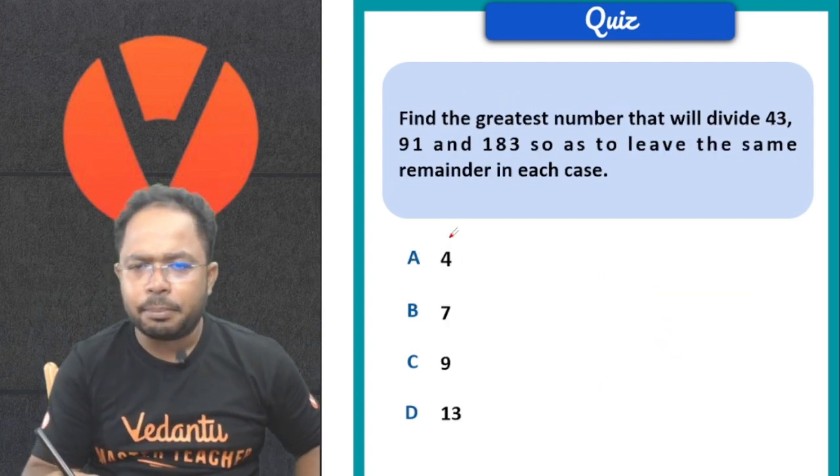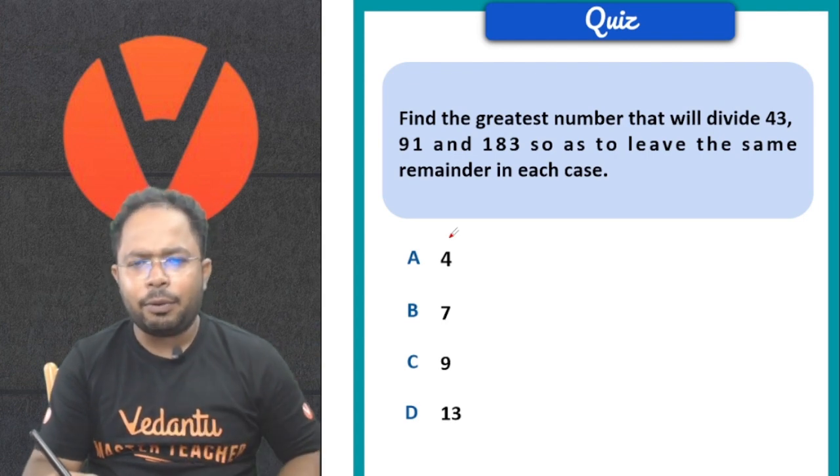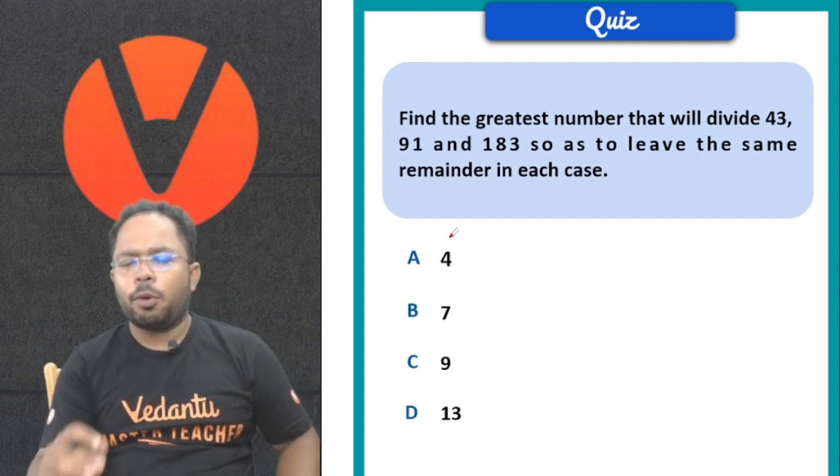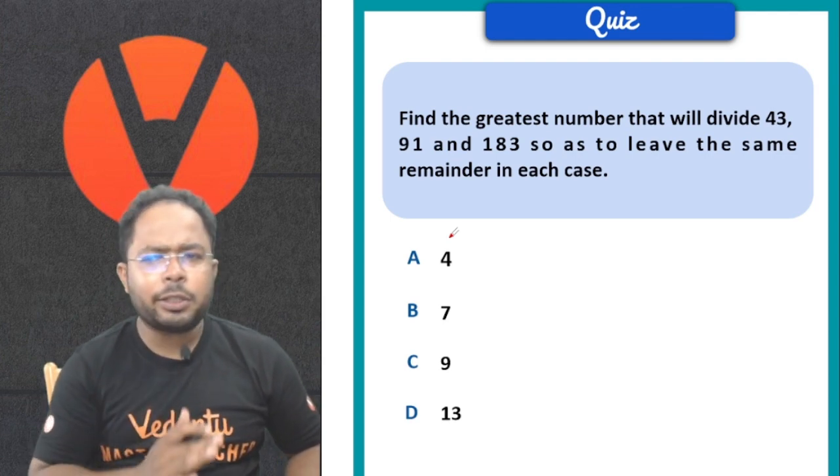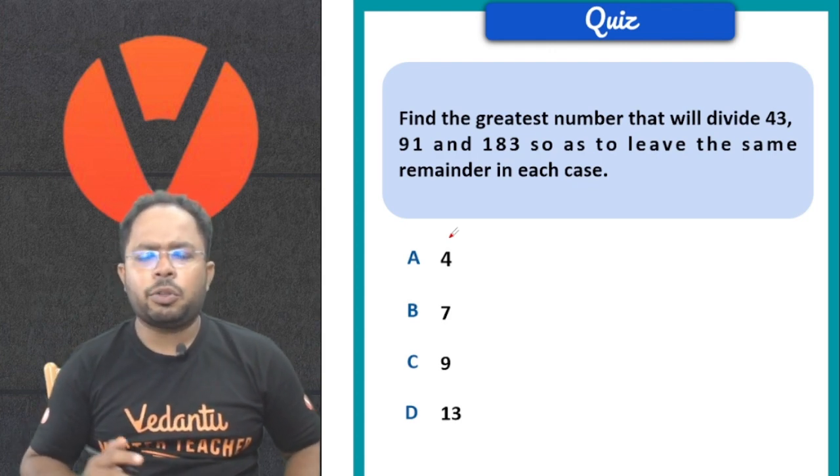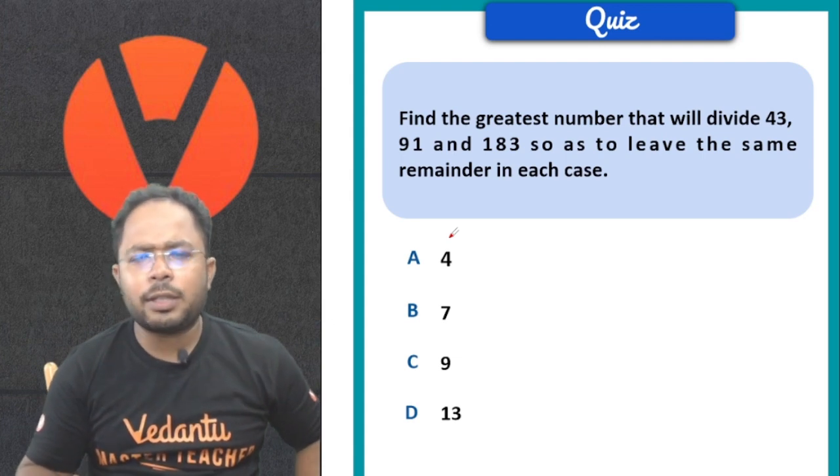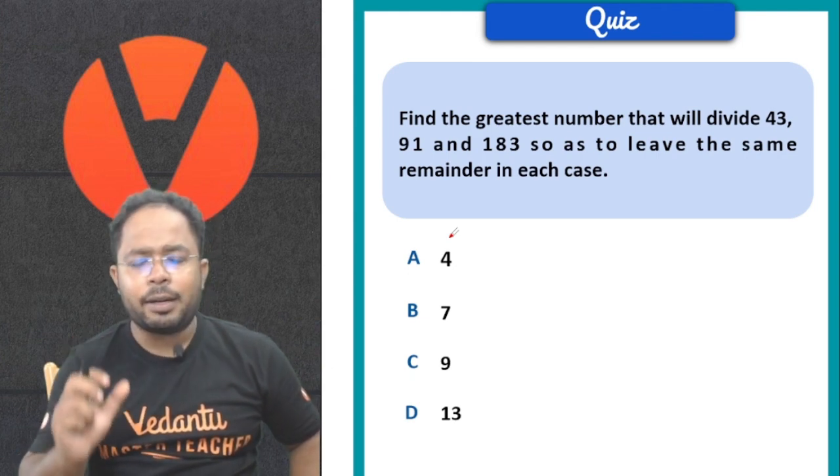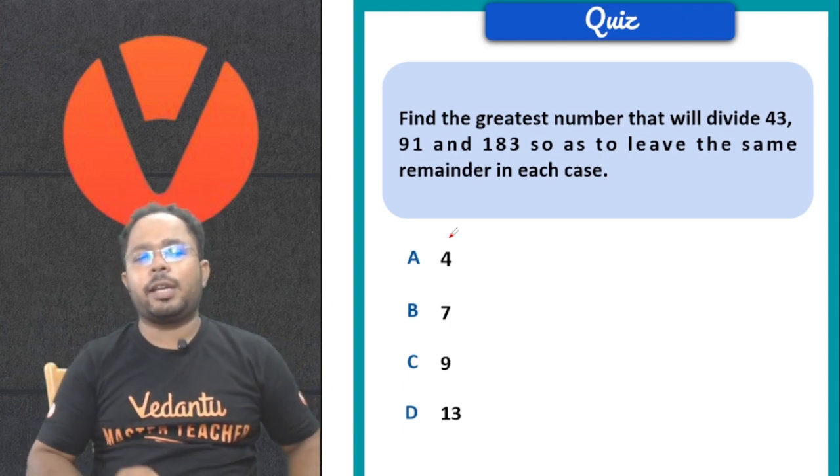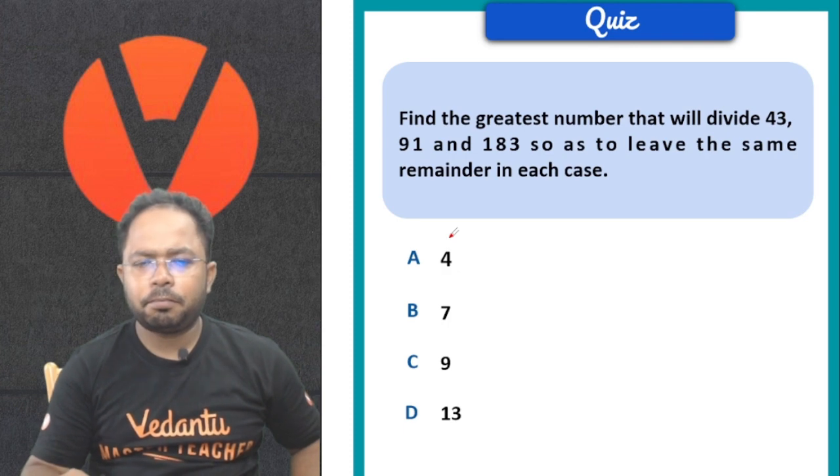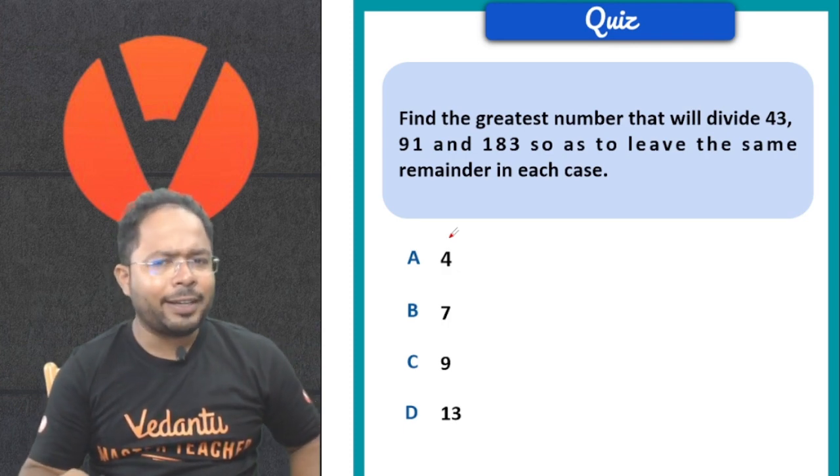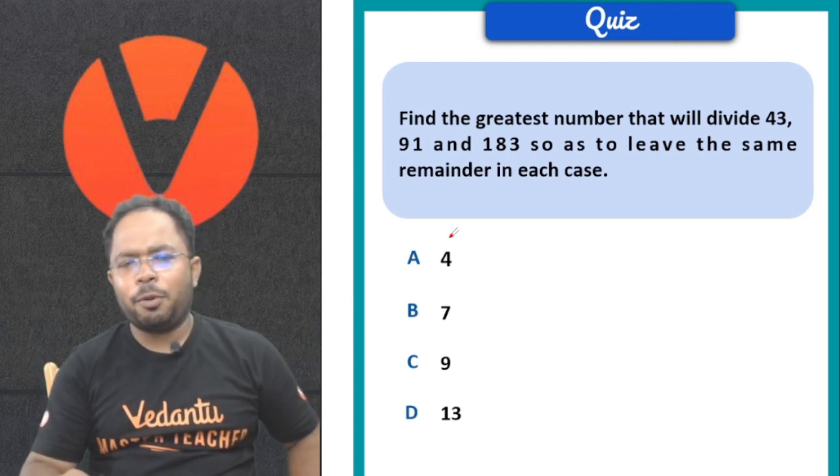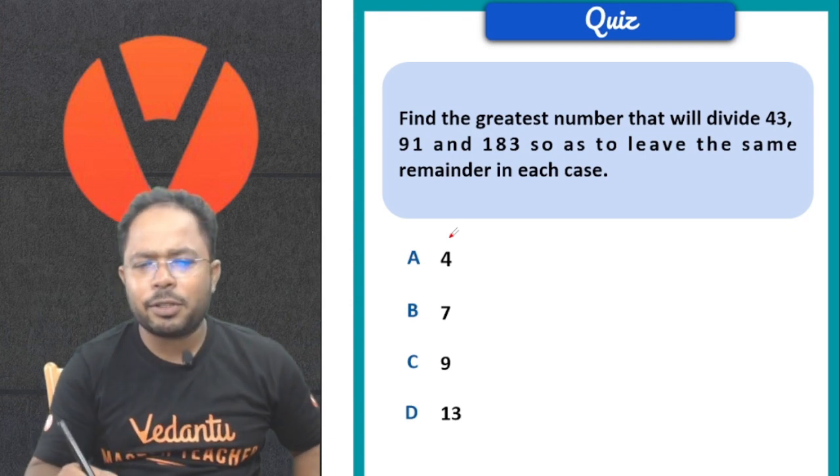Next question: Find the greatest number that will divide 43, 91, and 183 so as to leave the same remainder in each case. Put the video on pause, solve it, and find the correct answer.